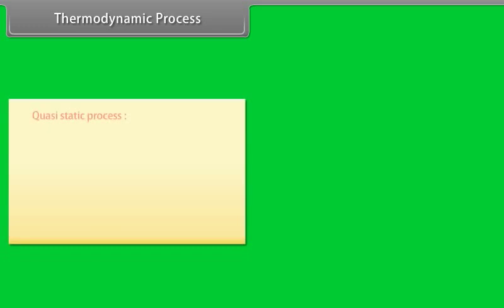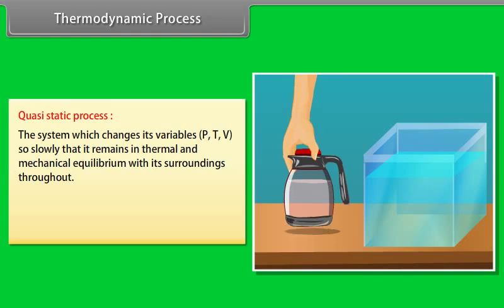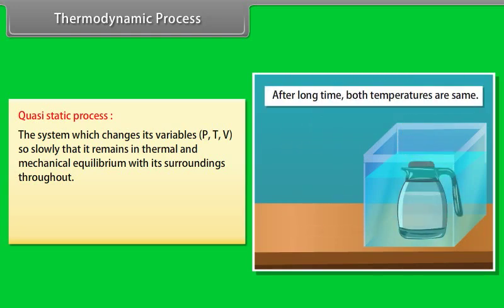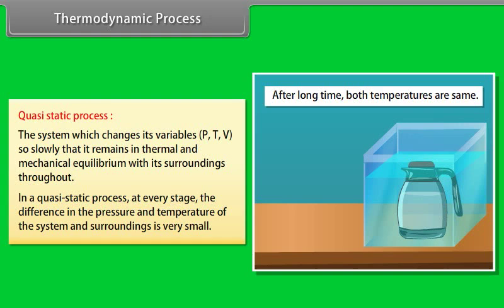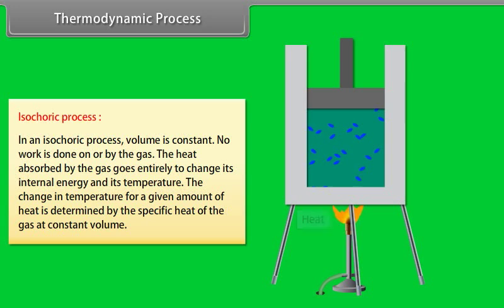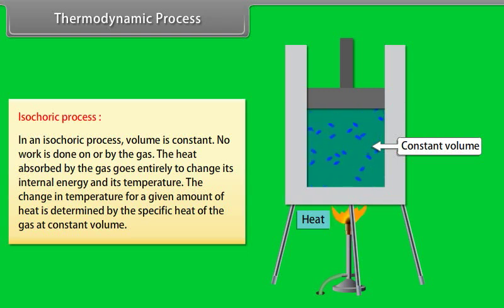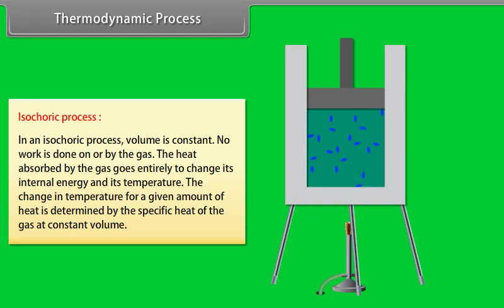Thermodynamic processes. Quasi-static process: a system which changes its variables so slowly that it remains in thermal and mechanical equilibrium with its surroundings throughout. At every stage, the difference in pressure and temperature of the system and surroundings is very small. Isochoric process: volume is constant. No work is done on or by the gas. The heat absorbed goes entirely to change the internal energy and temperature of the gas. The change in temperature for a given amount of heat is determined by the specific heat at constant volume.